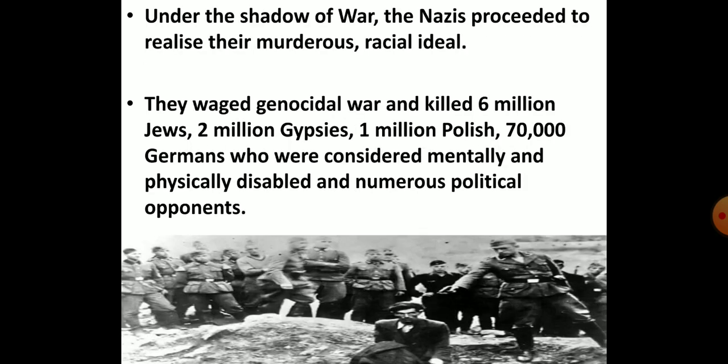Under the shadow of the Second World War, the Nazis started to bring their murderous racial ideal into reality. They began genocidal war — meaning the killing of large, especially targeted, sections of people on a large scale. This resulted in the mass murder of selected groups of innocent civilians: 60 lakh Jews, 20 lakh gypsies, 10 lakh Polish, 70,000 Germans who were considered mentally or physically disabled, and numerous political opponents.